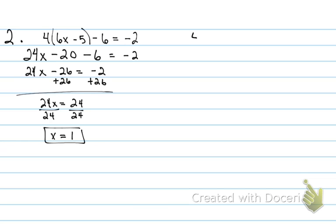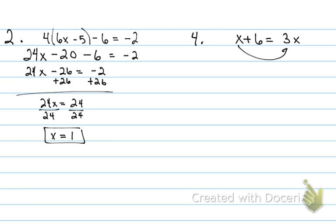Number four looks pretty simple at first glance, but there's a variable on both sides of the equation. I need my variable on one side, so I have two options: subtract x from 3x on the right, or subtract 3x and bring it to the left side.